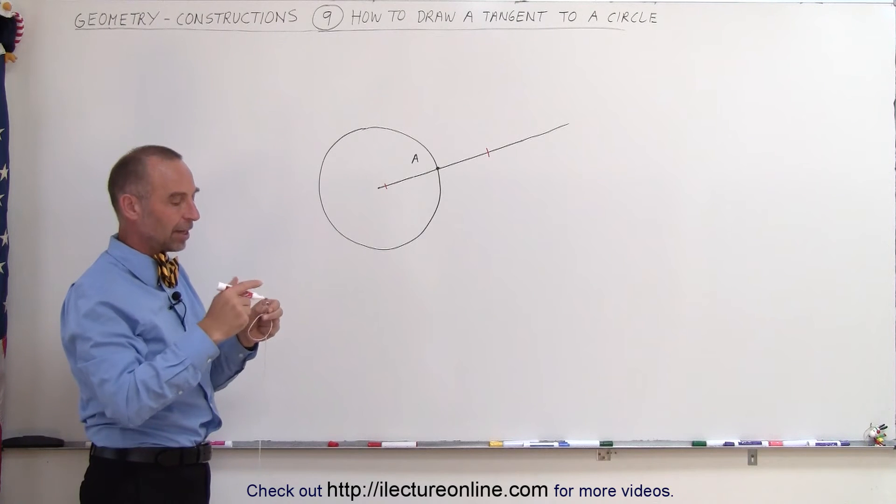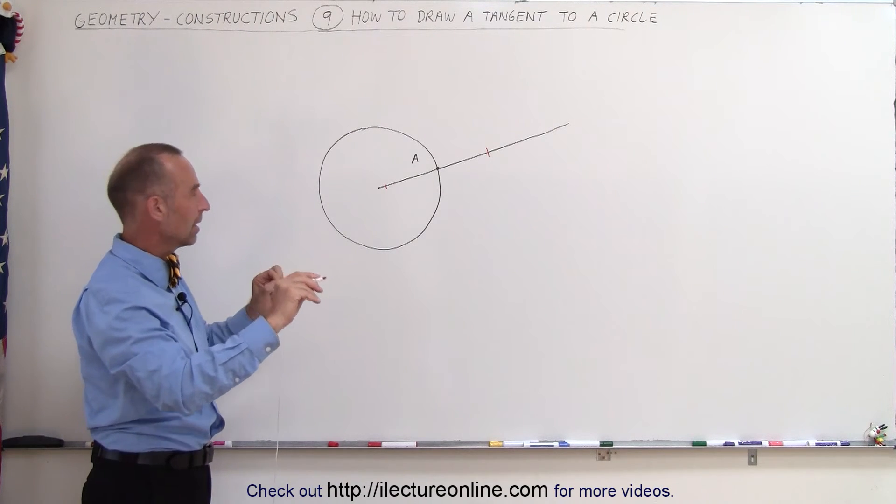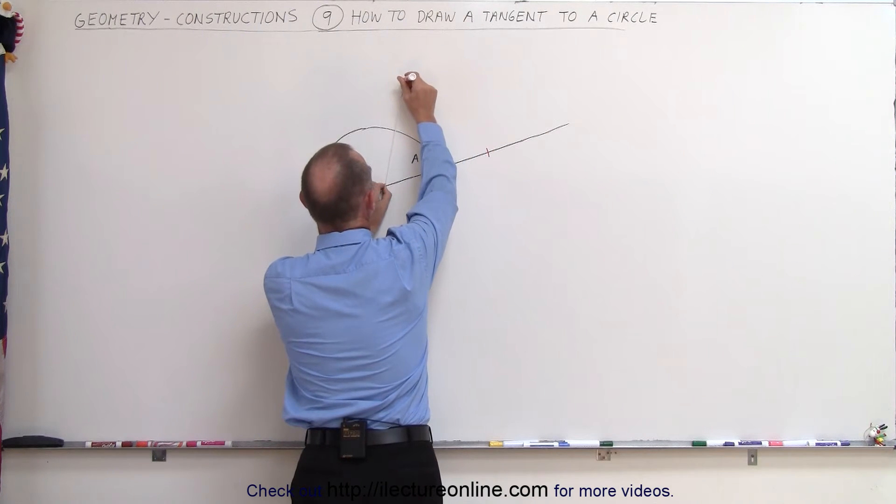Now I'll go ahead and grab my compass again. Make my compass a little bit bigger. So I need a little bit more string. I go to this first point right there and I draw an arc in this direction.